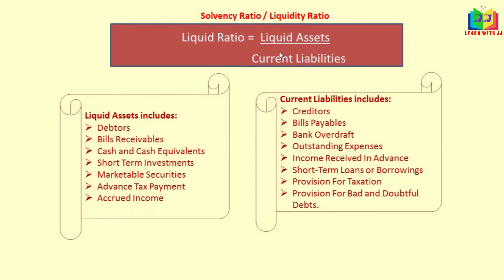Liquid assets are current assets minus stock and prepaid expenses. In other words, liquid assets include debtors, bills receivables, cash and cash equivalents, short-term investments, marketable securities, advanced tax payment, and accrued income — excluding stock and prepaid expenses. The current liabilities remain the same for the liquid ratio.